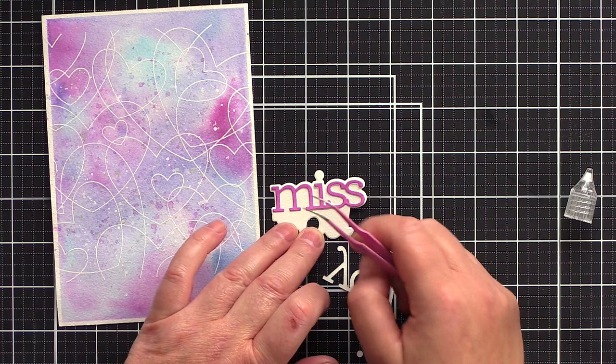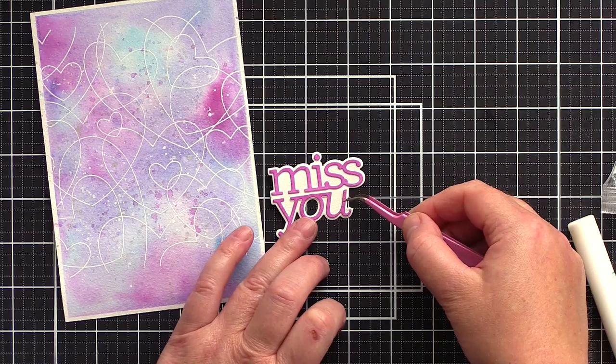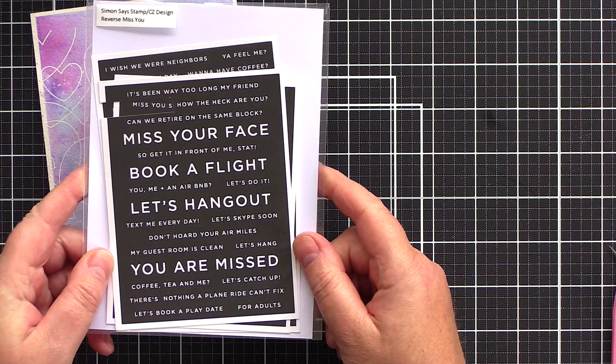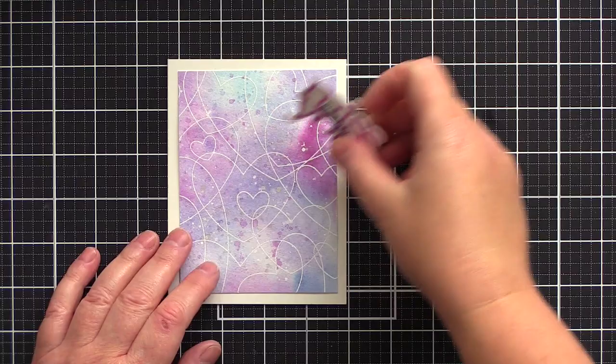I glued the letters to their background with Gina K Connect glue and then added foam adhesive to the back. I took a coordinating sentiment from the reverse Miss You sentiment strips from CZ Design and added foam adhesive to the back of that too.